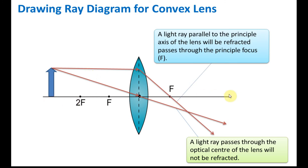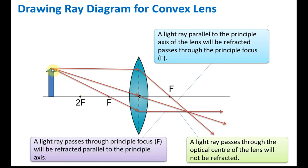This is the principal axis. Rule number two: a light ray which is parallel to the principal axis will be refracted to pass through the principal focus. So a light ray parallel to the principal axis of the lens will be refracted and pass through the principal focus.